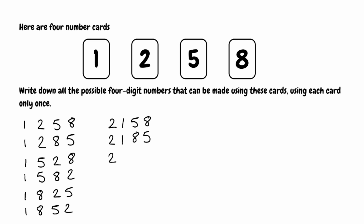Keeping 2 at the front, we've done 1, so next is 5: giving 2, 5, 1, 8, and swapping the last two gives 2, 5, 8, 1. Then with 2 and 8 at the front, the remaining digits 1 and 5 give 2, 8, 1, 5, and swapping those gives 2, 8, 5, 1.